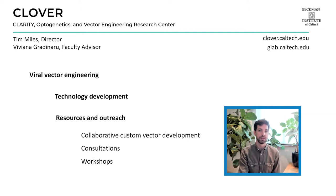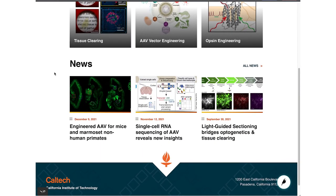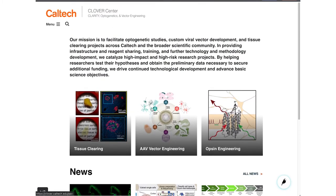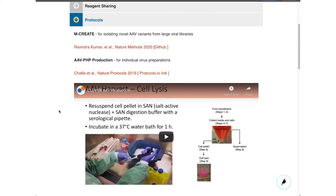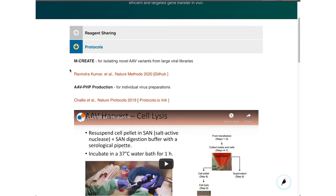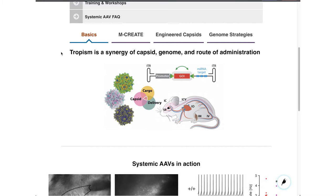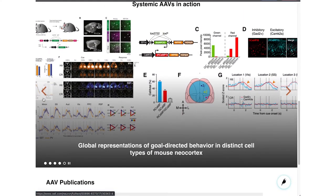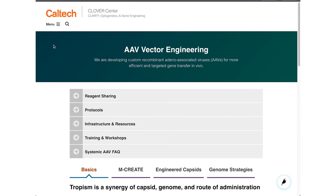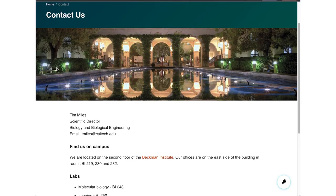Clover is a research center of the Beckman Institute at Caltech that grew out of Professor Viviana Gratinaru's lab there. We focus on viral vector engineering, contributing to technology development, and sharing our knowledge and reagents to make sure these AAVs reach their full potential. Our website, clover.caltech.edu, is a general resource for engineered systemic AAV that hosts protocols for capsid-directed evolution and production of individual AAV, as well as answers to frequently asked questions about AAV implementation. Our goal is that your experiments can proceed as smoothly as possible.